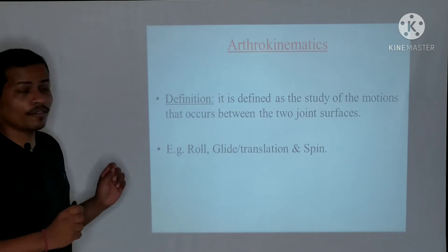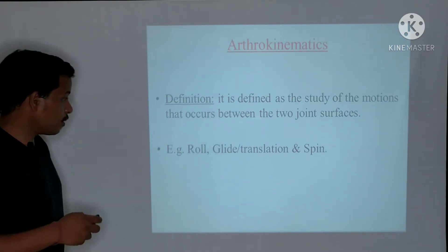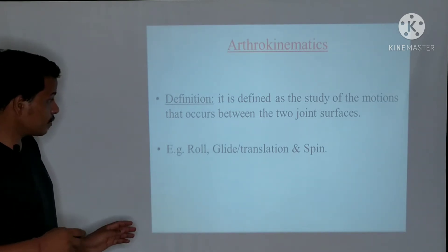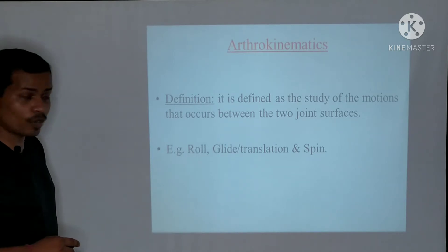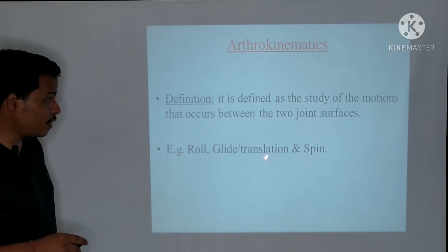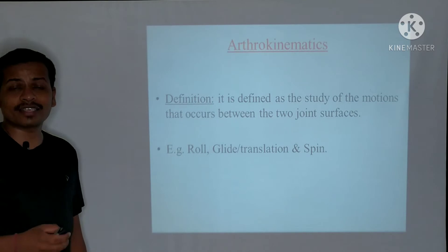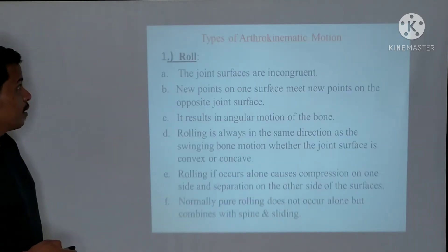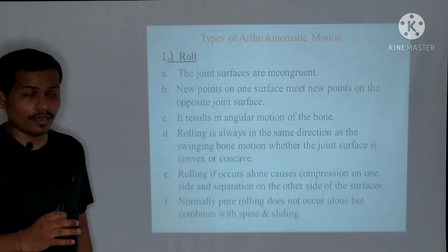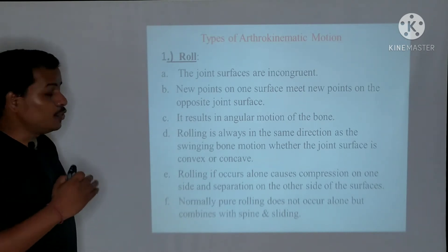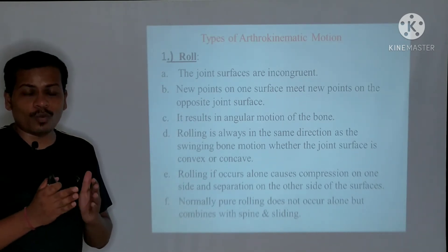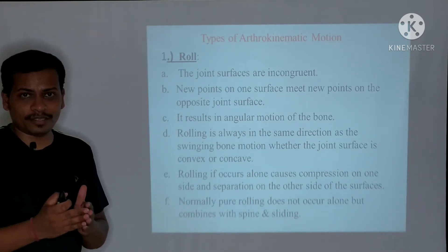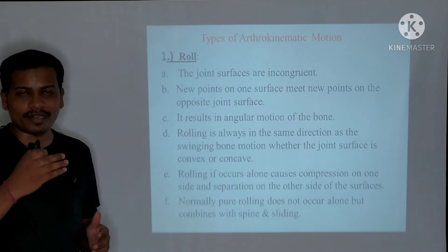There are three examples of arthrokinematics: roll, glide (also known as translation or slide), and spin.